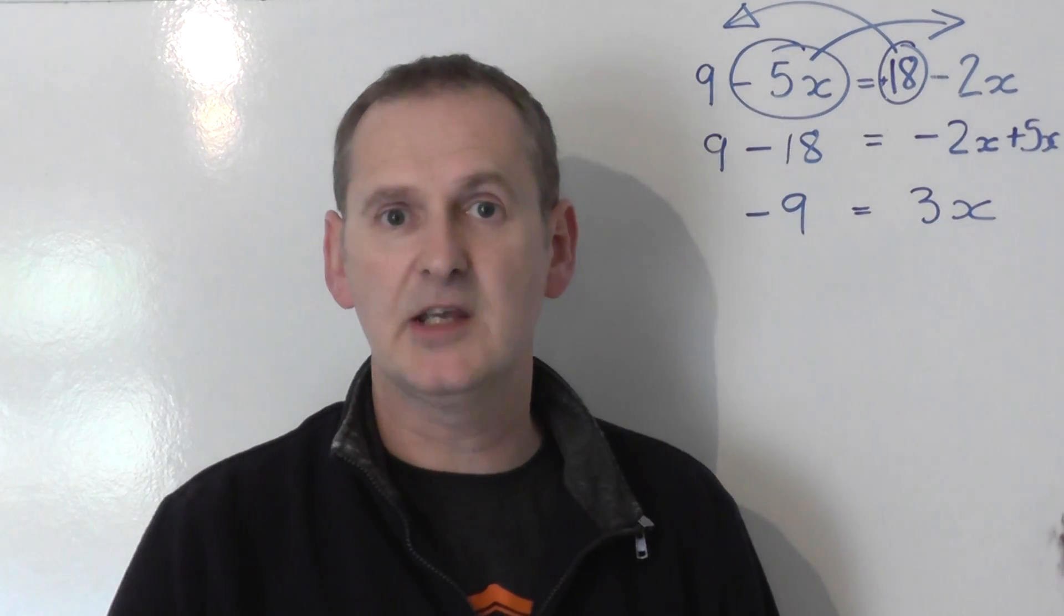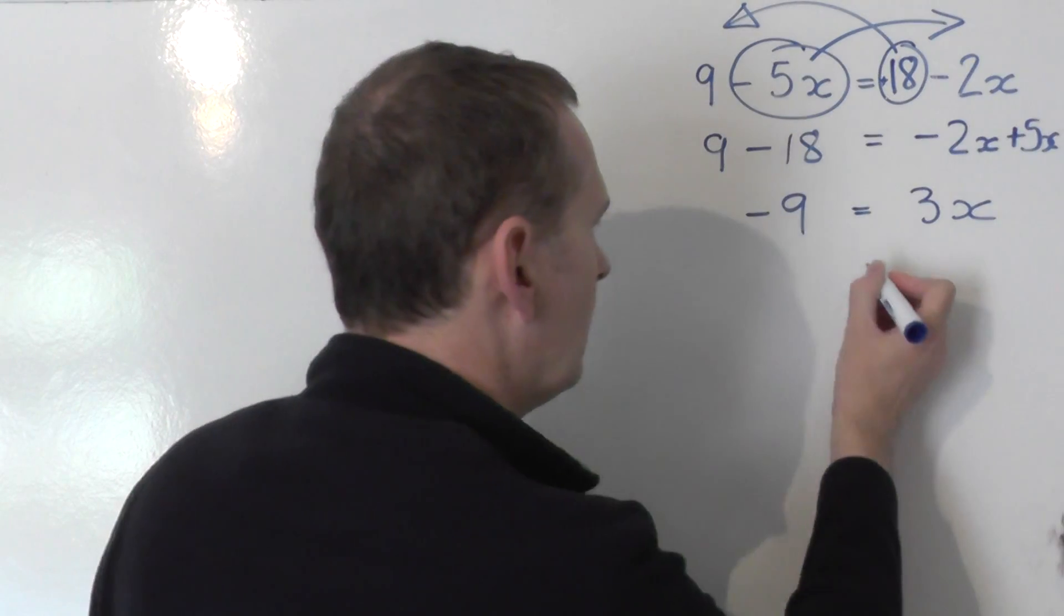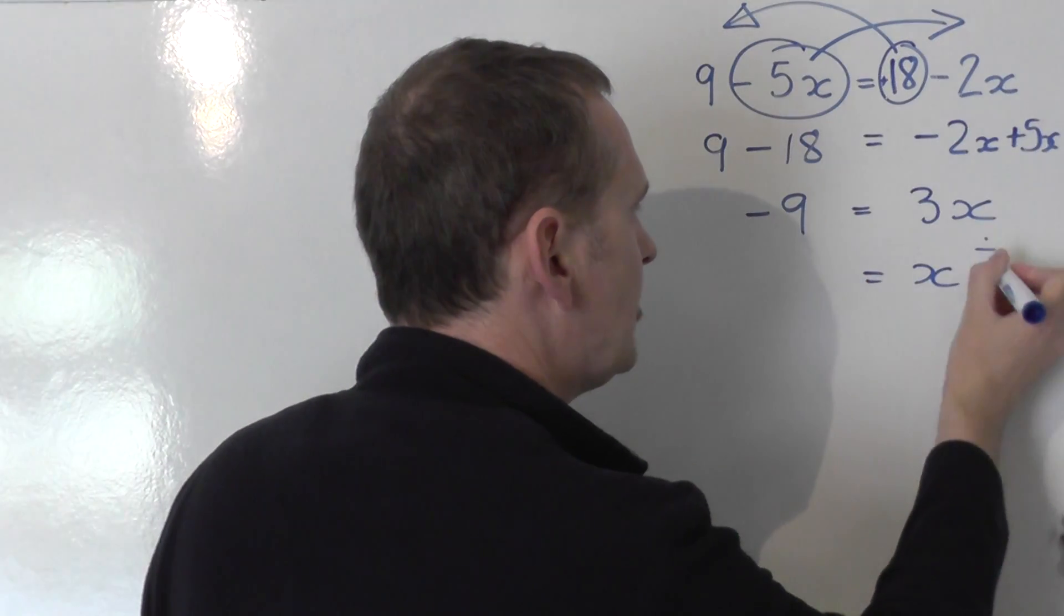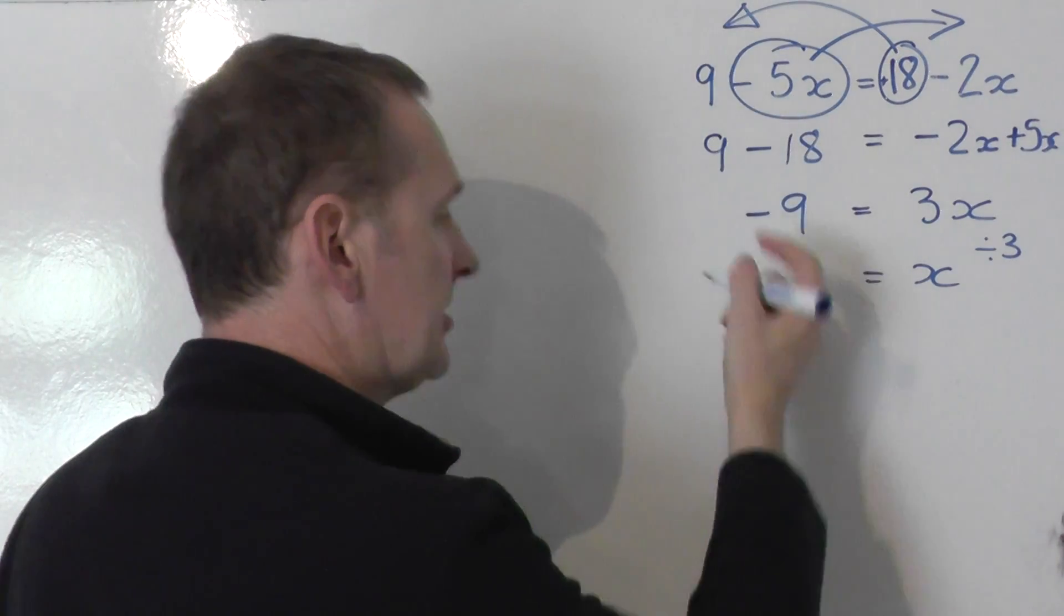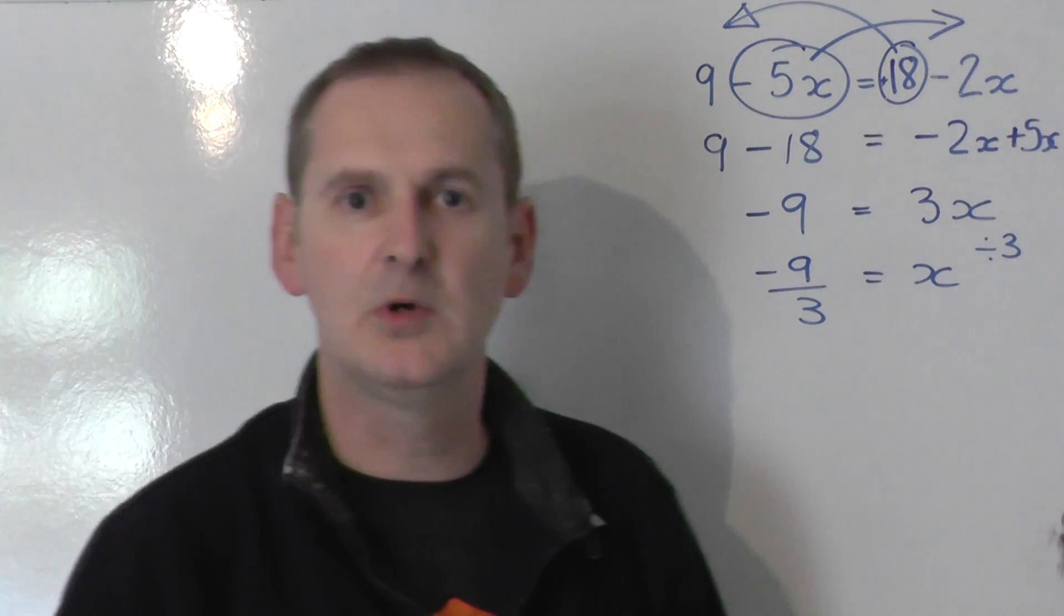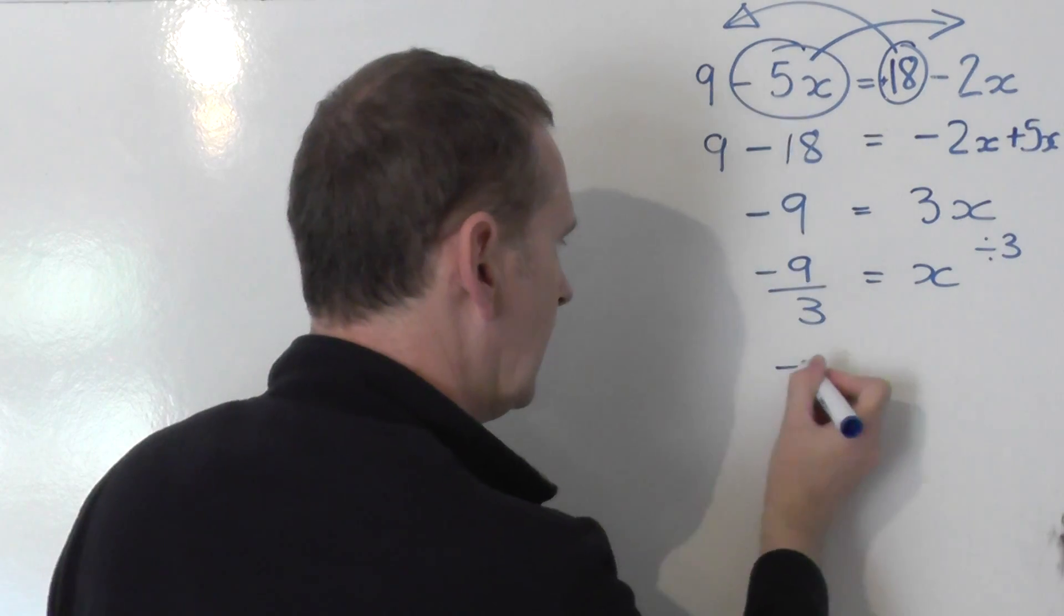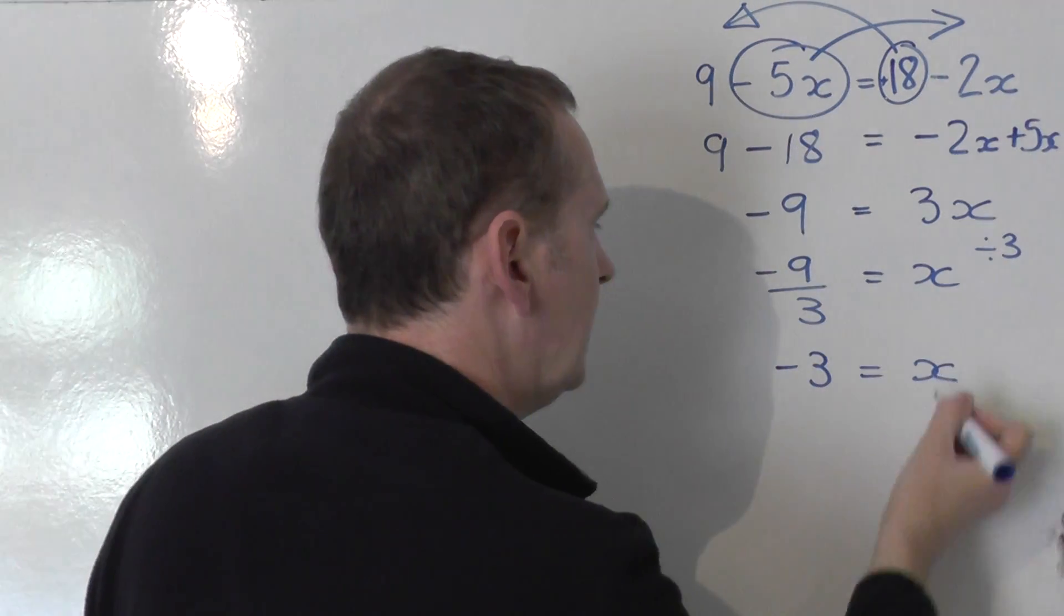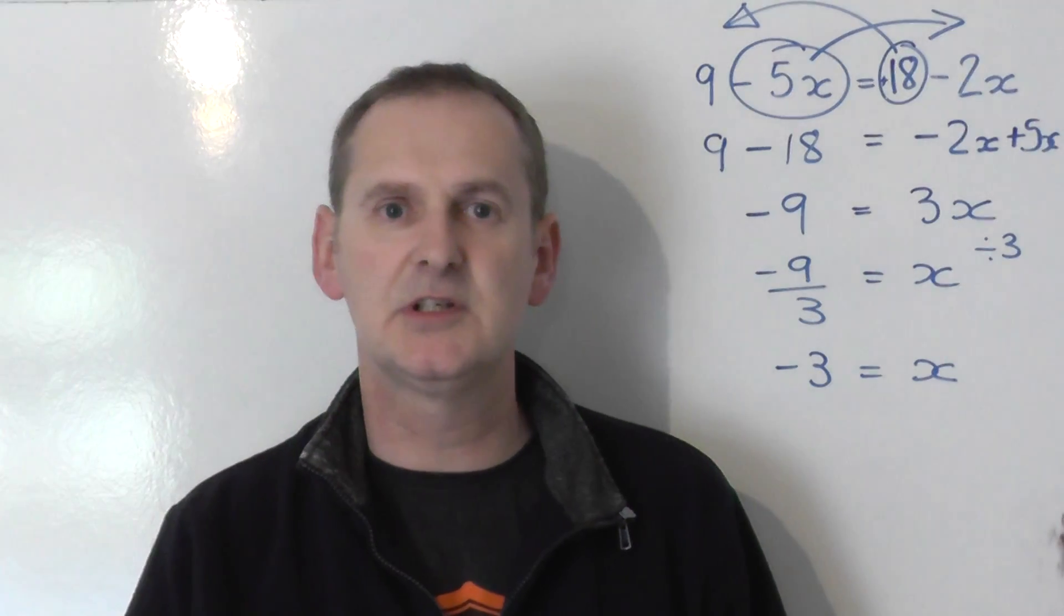So I know that minus 9 equals 3x, but I don't want to know what 3x is. I want to know what x is. So I need to go from 3x to x by sharing the right by 3. So I need to share the left-hand side by 3 as well. Minus 9, share by 3, gives you an answer of negative 3. And there you go. So minus 3 equals x is the solution to this equation.